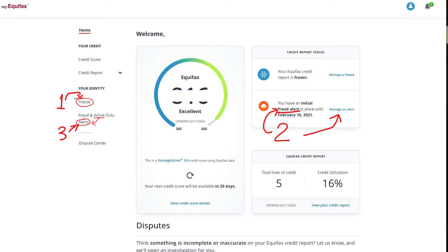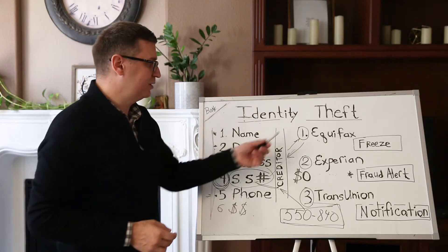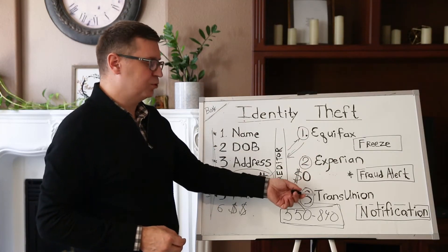So what does the freeze do? In case a creditor ever uses your social to pull information, the credit history bureaus will deny information. That's how the freeze works.